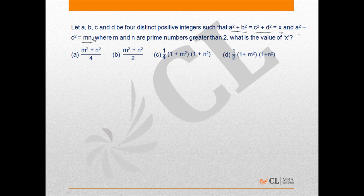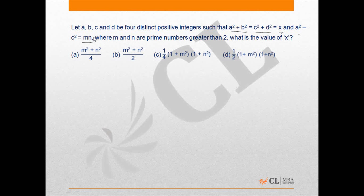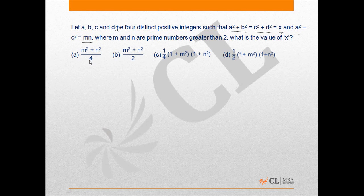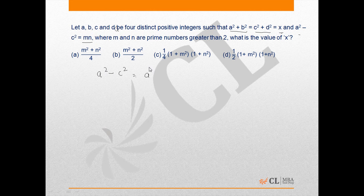if we solve this equation, we assume that m and n are prime numbers. a square minus c square will be equal to d square minus b square equals to mn and there are 4 possible cases that can be there.